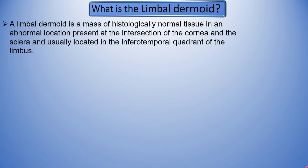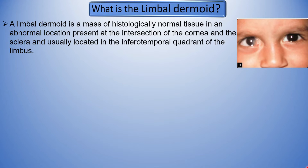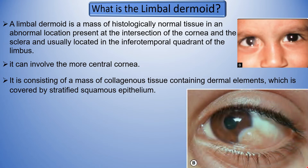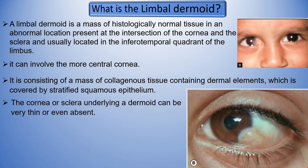A Limbal Dermoid is a mass of histologically normal tissue in an abnormal location, present at the intersection of the cornea and sclera, and usually located in the inferotemporal quadrant of the limbus. It can involve the more central cornea. It consists of a mass of collagenous tissue containing dermal elements, which is covered by stratified squamous epithelium. The cornea or sclera underlying a dermoid can be very thin or even absent.